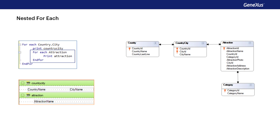Thus, its base table is determined as if it was a standalone foreach command. Therefore, its base table will be attraction.